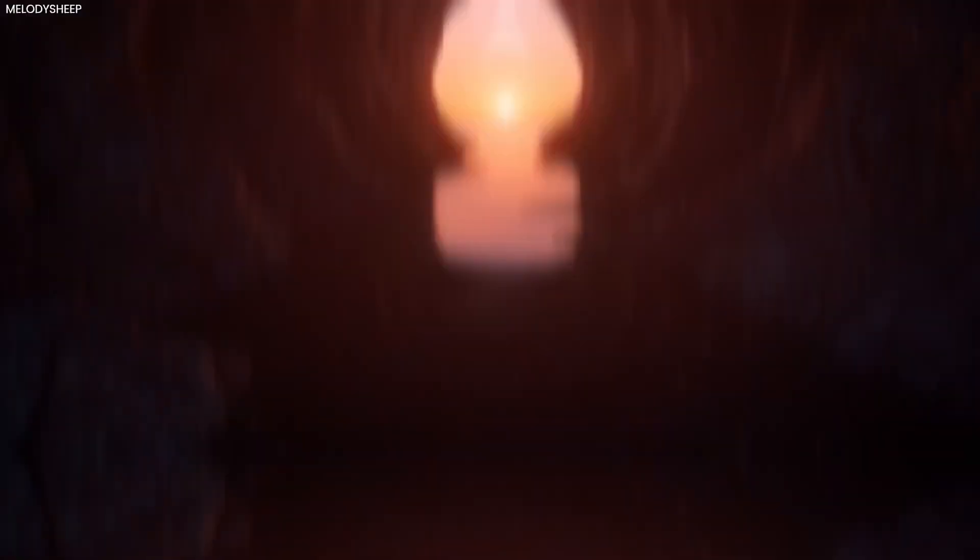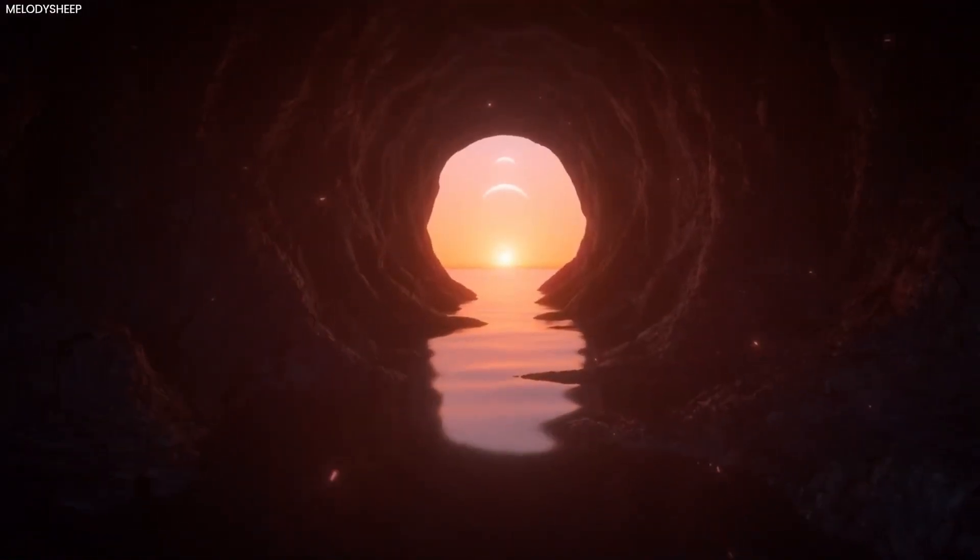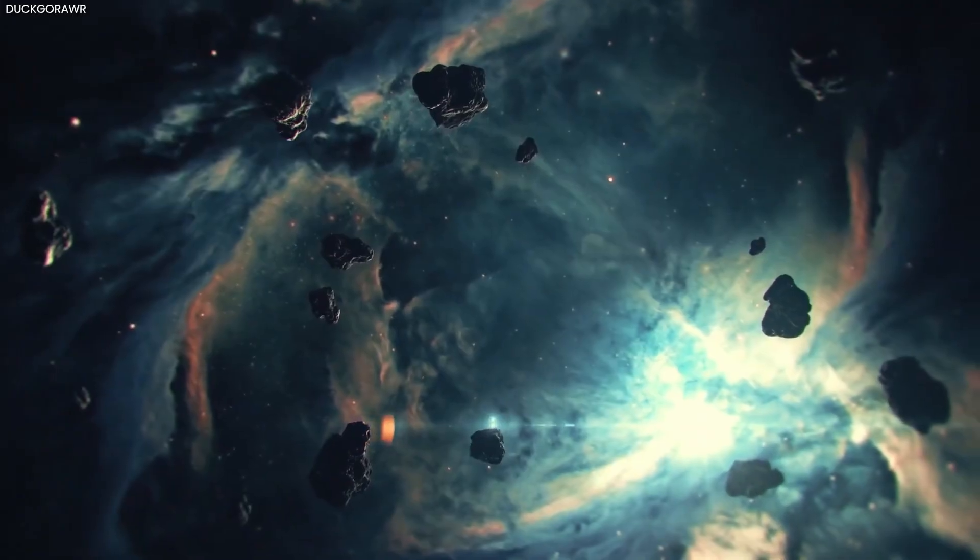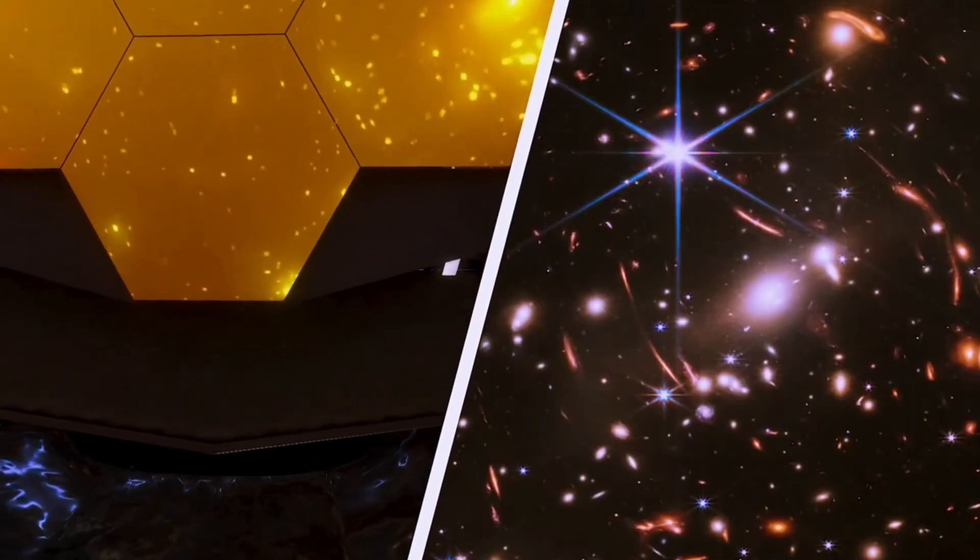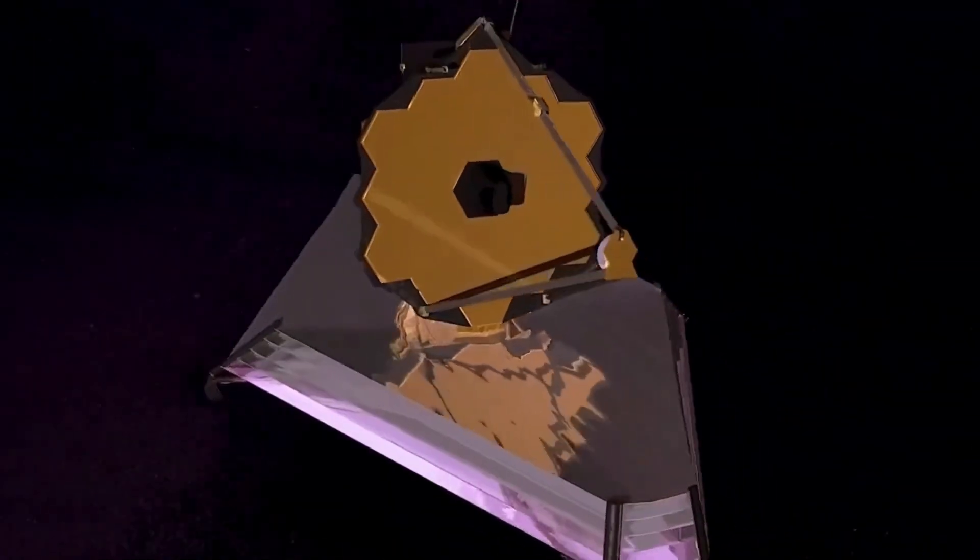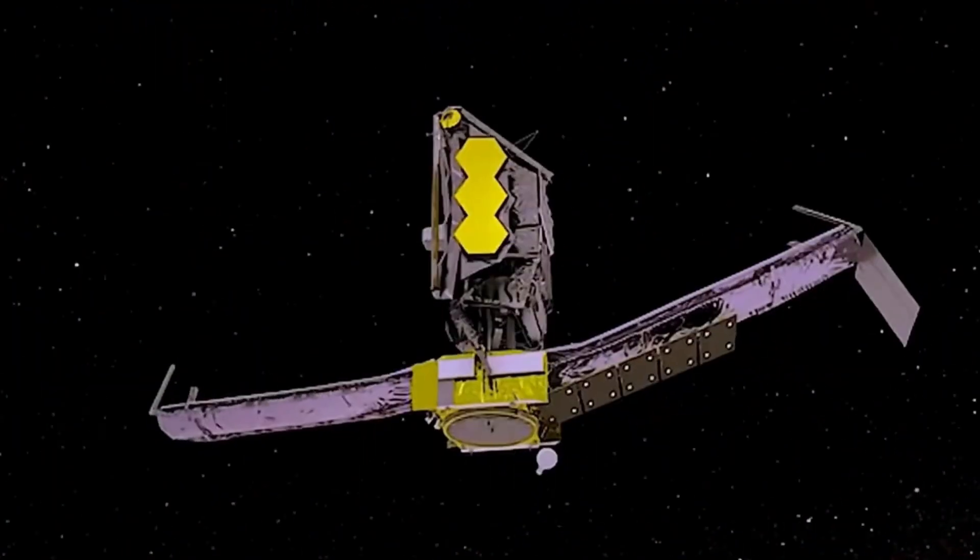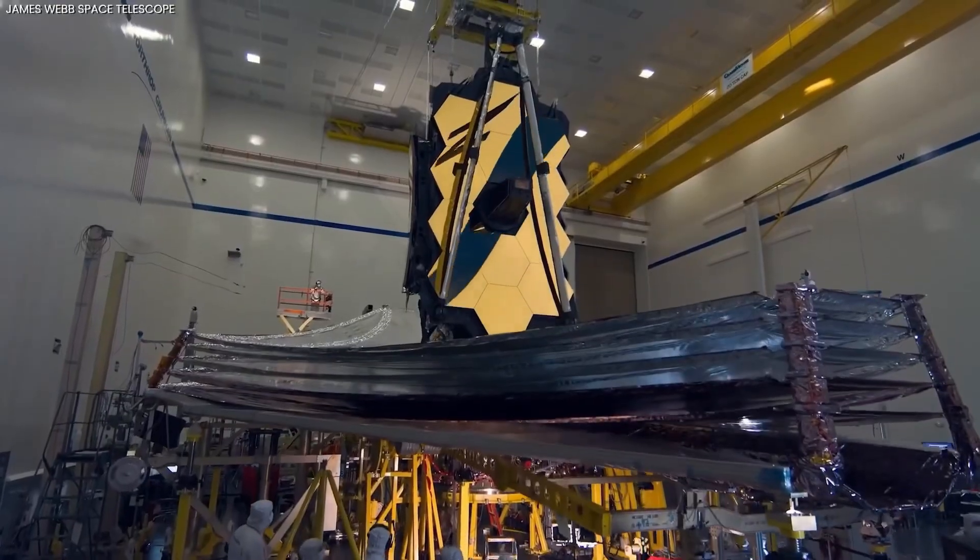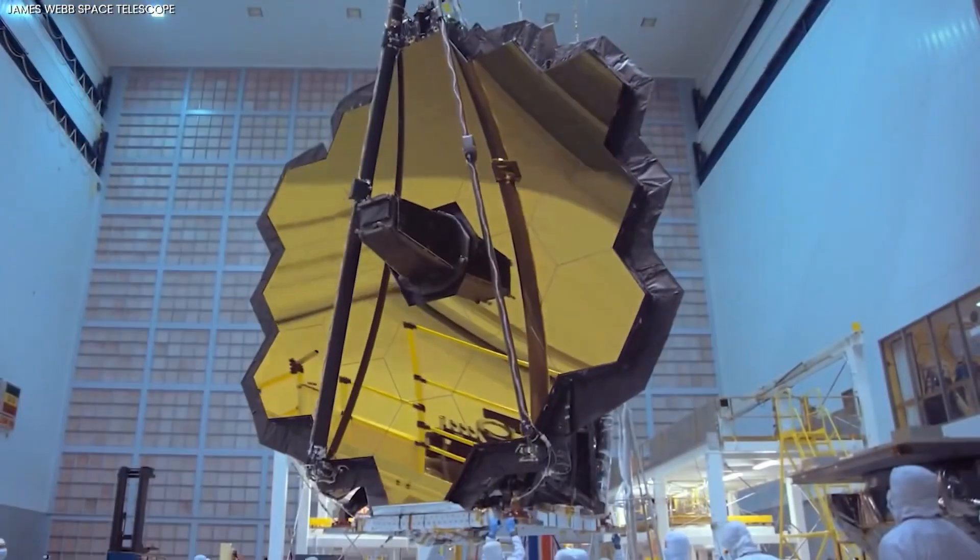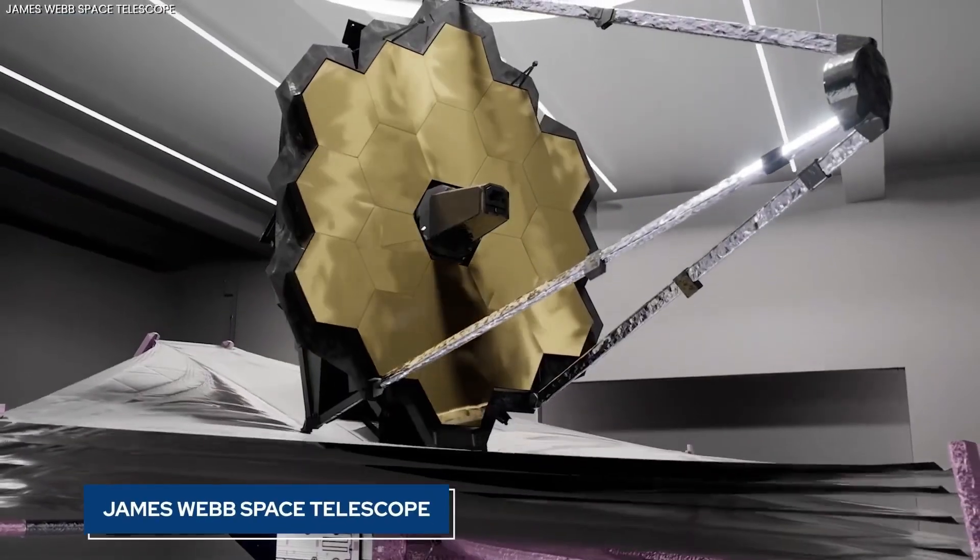Unlike random debris, this had straight edges and an apparent geometric form. What stands out is NASA's uncharacteristic silence on the matter. The agency typically catalogues and explains every anomaly, yet in this case, nothing further was said. If it were an obvious reflection or space junk, why not clarify? The omission gave credibility to speculation that the image depicted something more unusual.